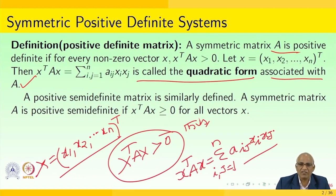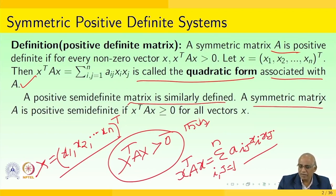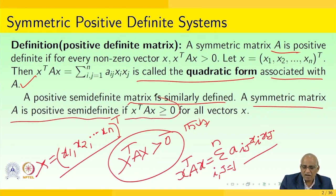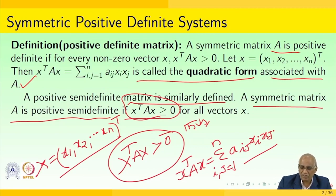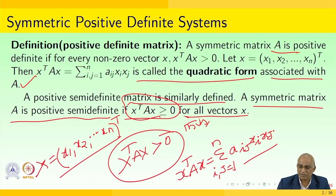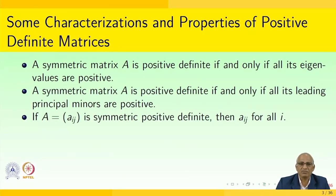A positive semi-definite matrix is similarly defined: a symmetric matrix A is semi-definite if x-transpose Ax is greater than or equal to 0 for all vectors x. Now we would see some of the characteristics and properties of positive definite matrices.